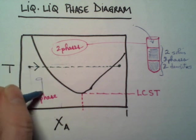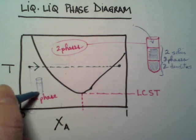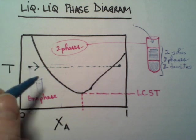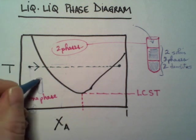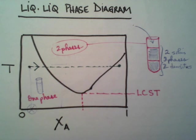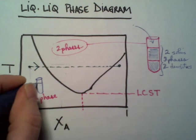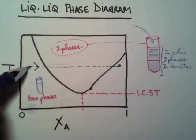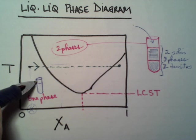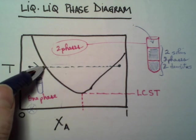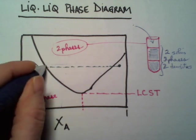But in this region, I have one phase. So if I look at my test tube, everything is in solution. I only have one meniscus separating the air from the solution. So everything is in solution. One phase, one solution.